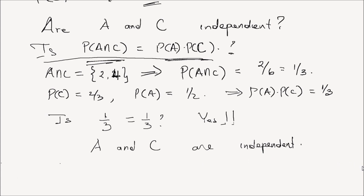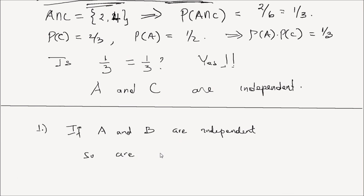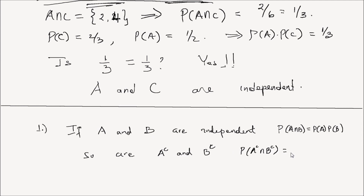Before I finish this lesson, I want to give you two points to remember. The first thing is: if two events A and B are independent, so are A complement and B complement. If A and B are independent, we know the probability of A∩B equals the probability of A times the probability of B. It is also true that P(A complement ∩ B complement) equals P(A complement) times P(B complement).